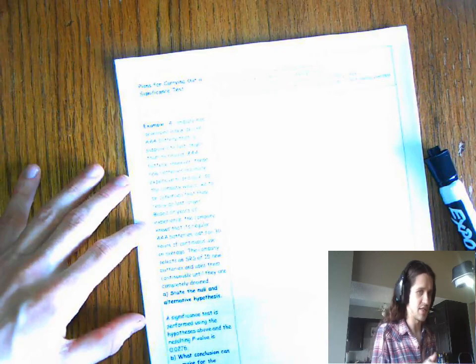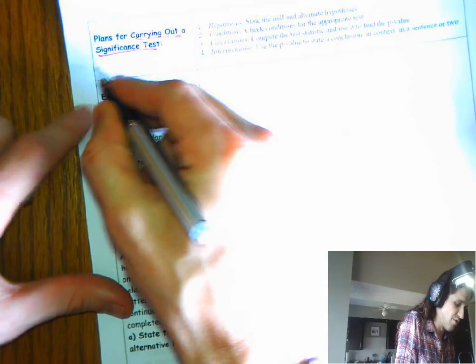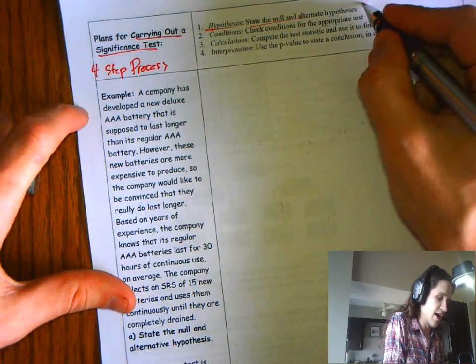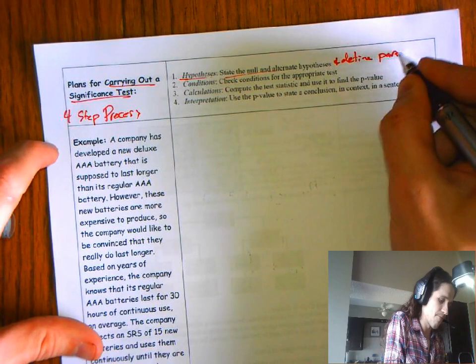Plan for carrying out a significance test. If they ever ask you to carry out a significance test, they're asking you to do the four-step process. Stating, planning, doing, and concluding. State, state the null hypothesis, and we're also going to say and define your parameters.